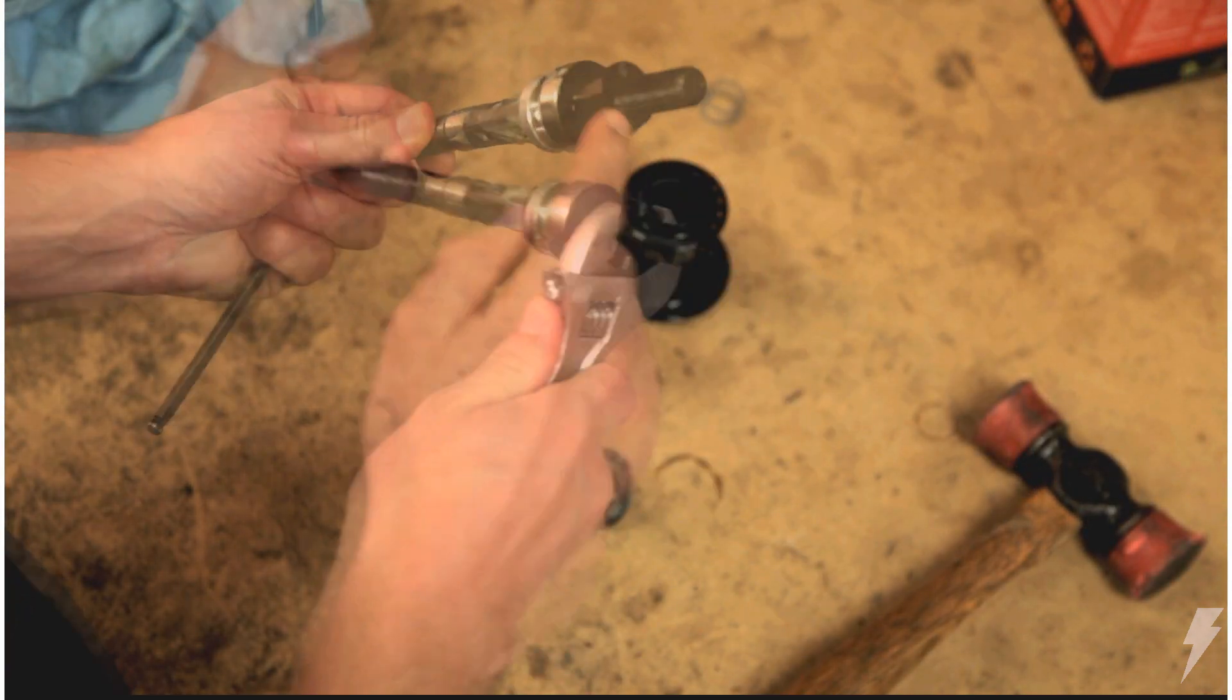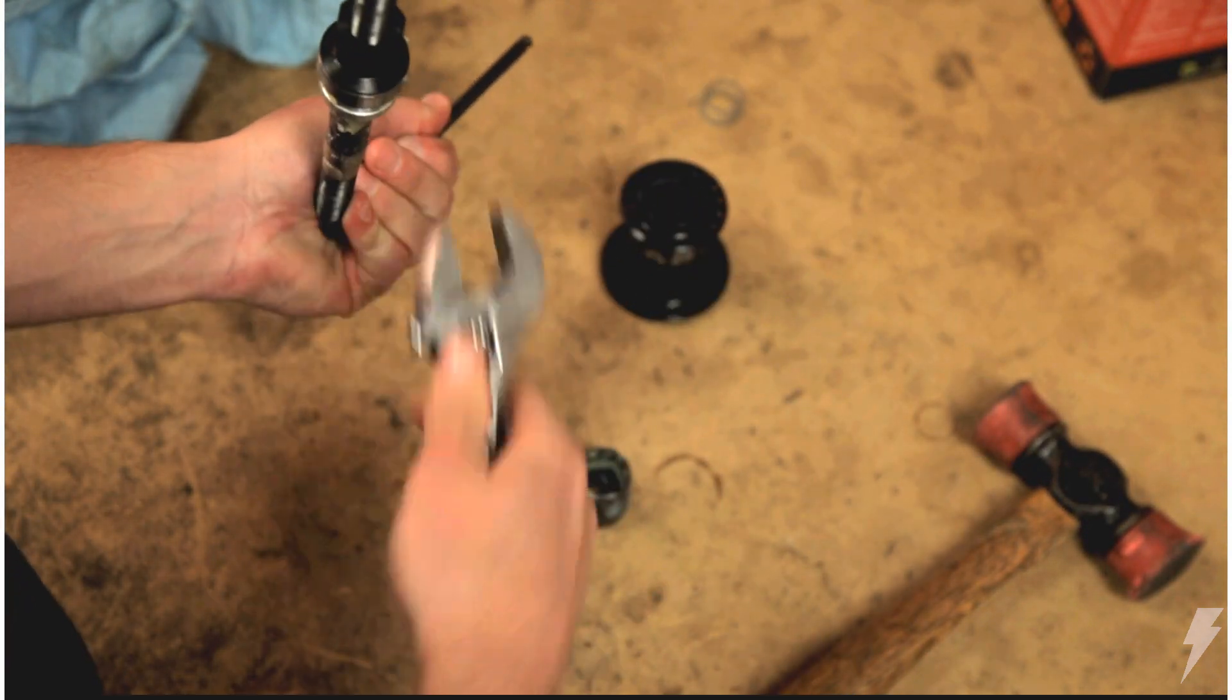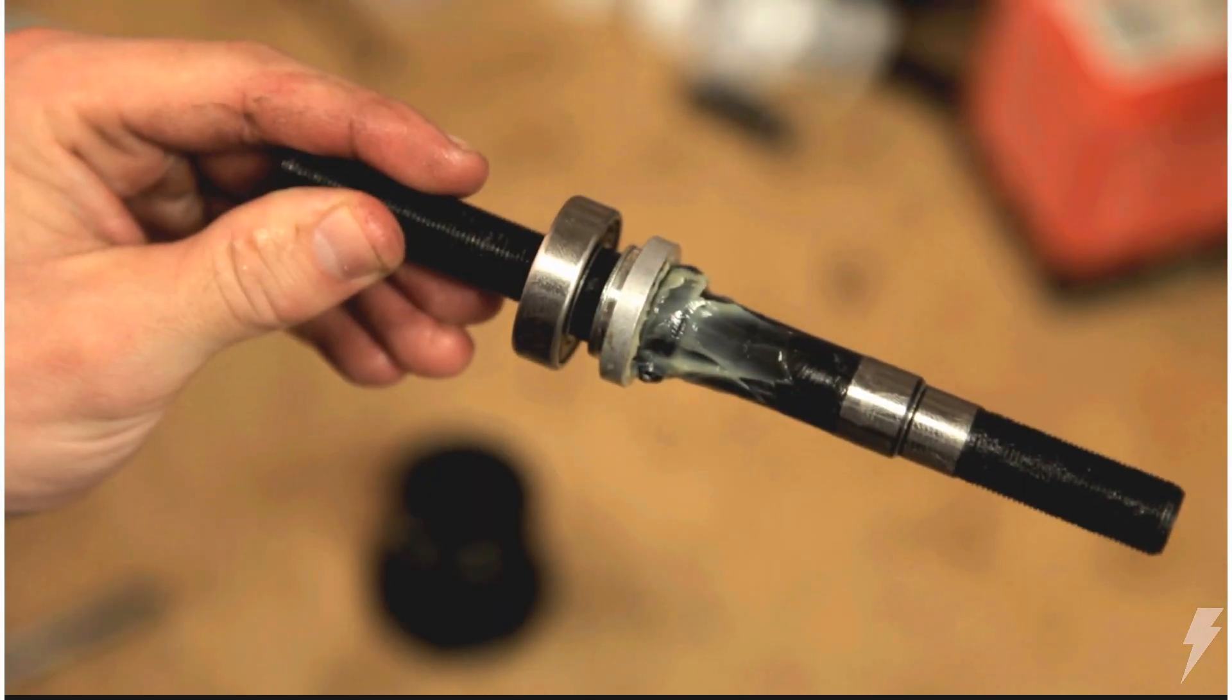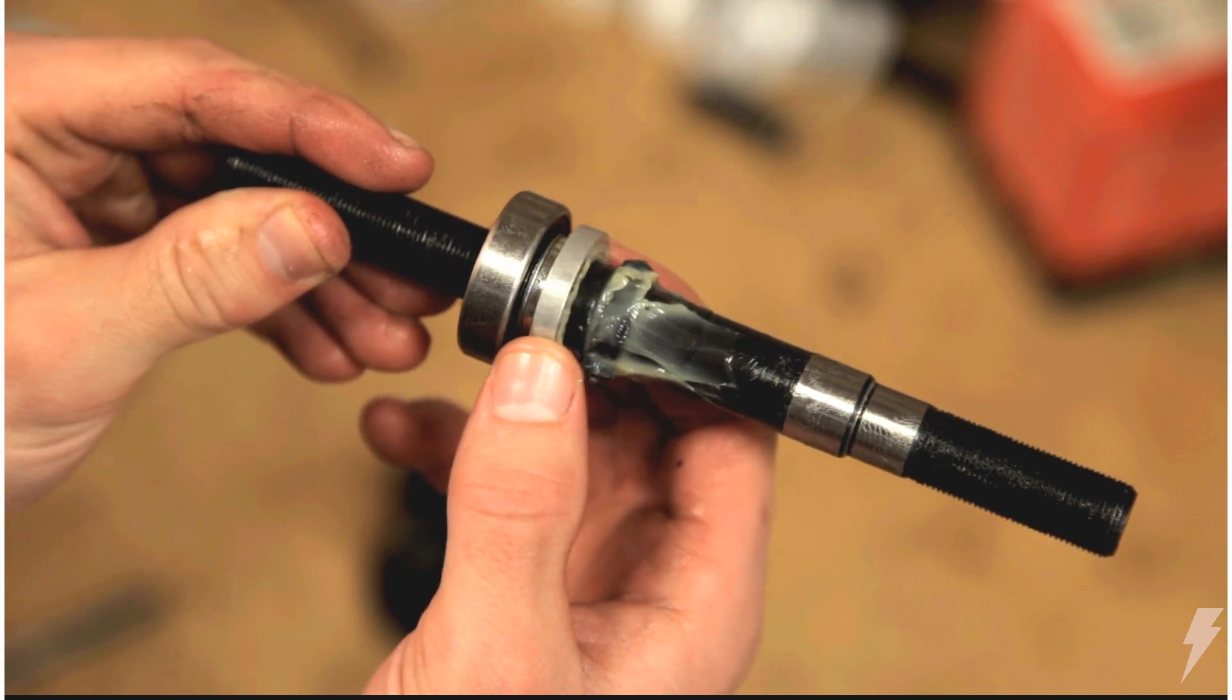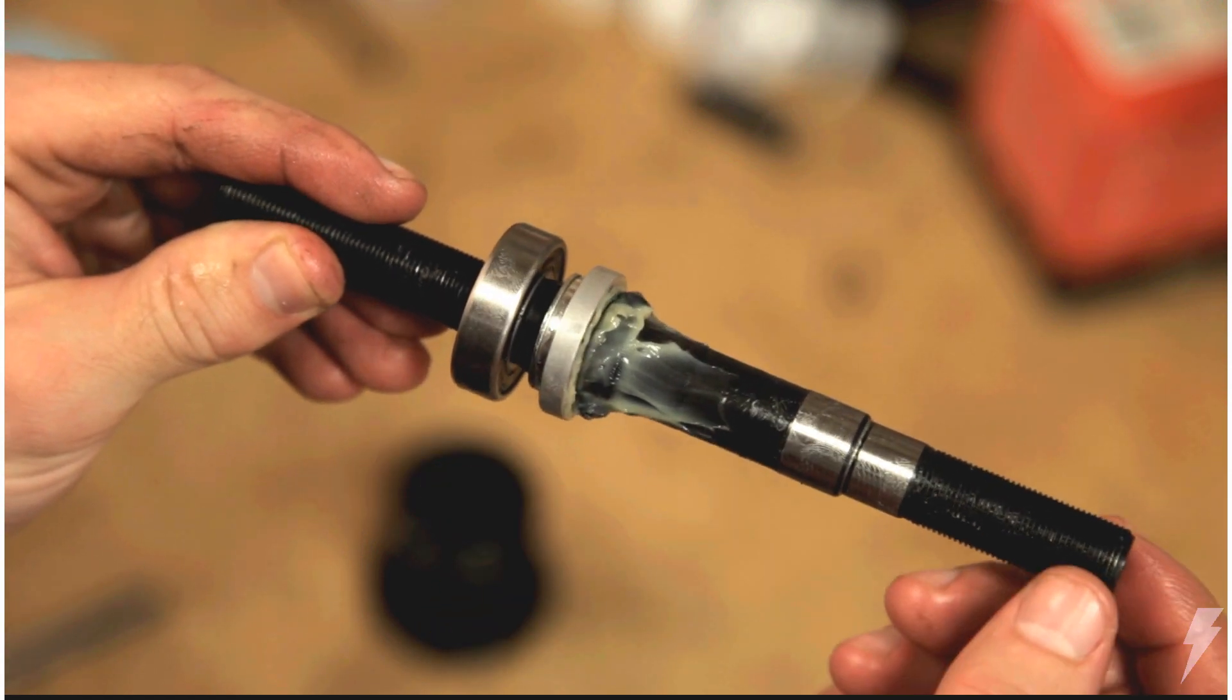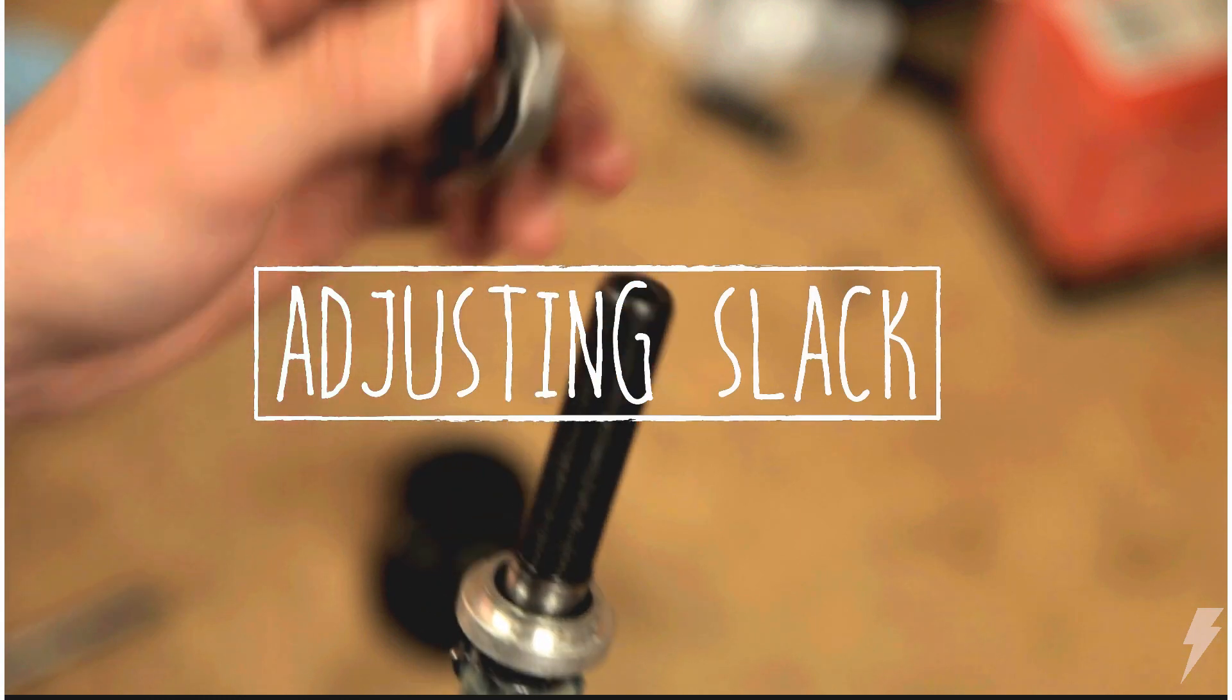Now remove the non-drive bearing cone. This space here determines the amount of slack. Adding washers will reduce the amount of slack, while removing washers will increase the amount of slack. Remove the non-drive bearing and make your adjustment.